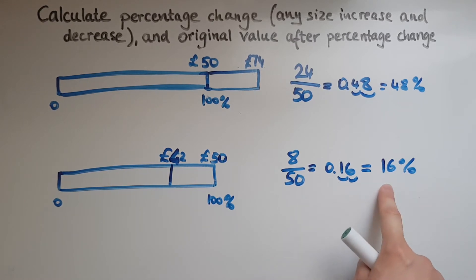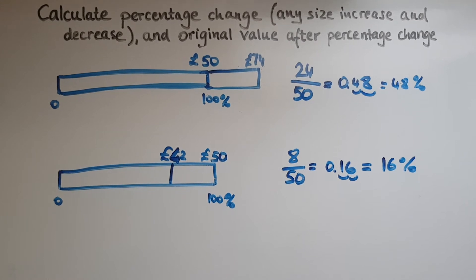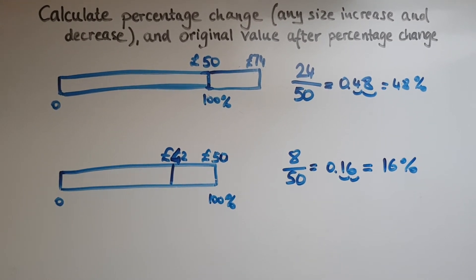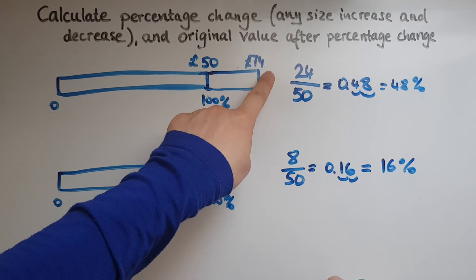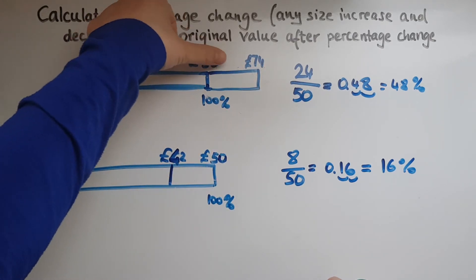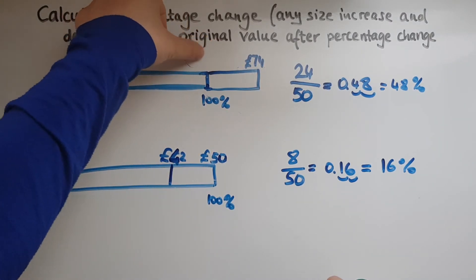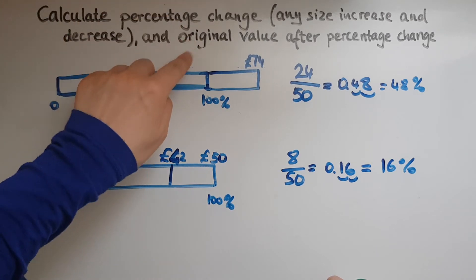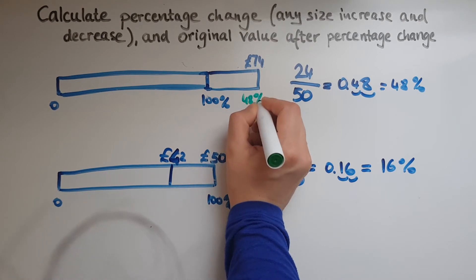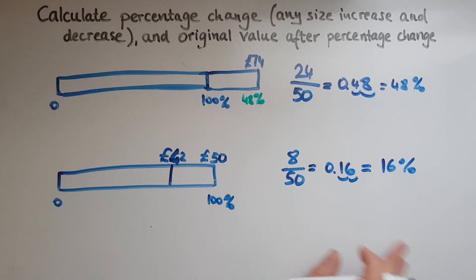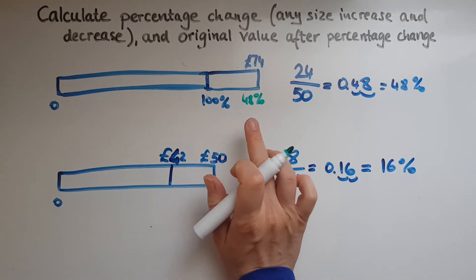Again, that means 16%. Now we look at working out the original value after percentage change. So let's suppose we've been given that the new price of a pair of shoes is 74 pounds but we don't know what it was originally. And we are given that there's been an increase by 48%.